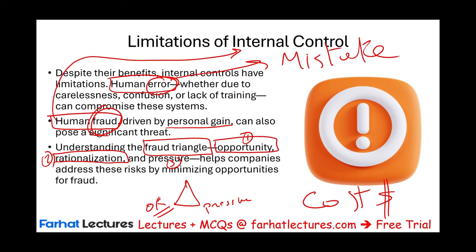The third component of the fraud triangle is opportunity. Opportunity means you have the means and access to commit the fraud. An internal control system cannot eliminate pressure — that pressure is external to the company. If you like to spend money you don't have, live beyond your means, or have an addiction, the company cannot control that. Also, the company cannot control your rationalization or your ethical standards.